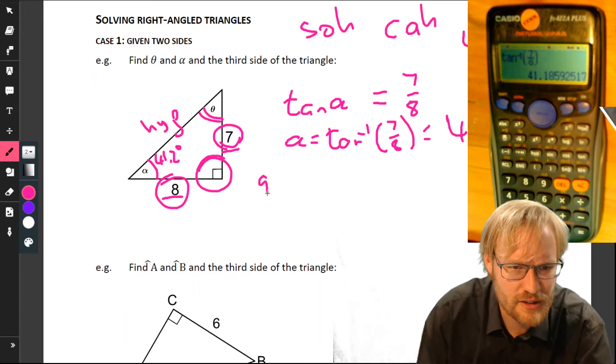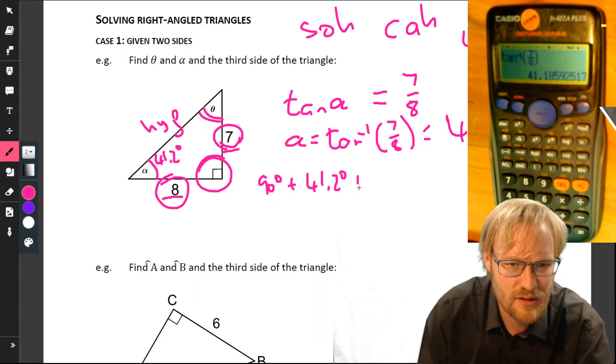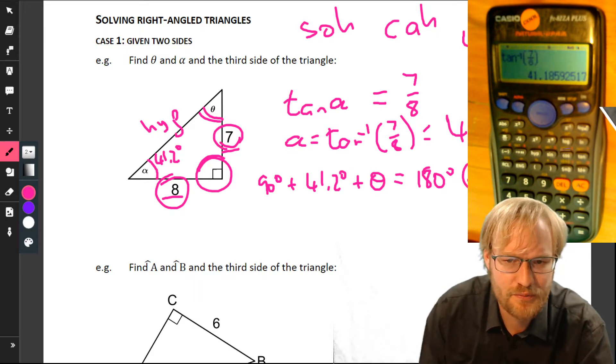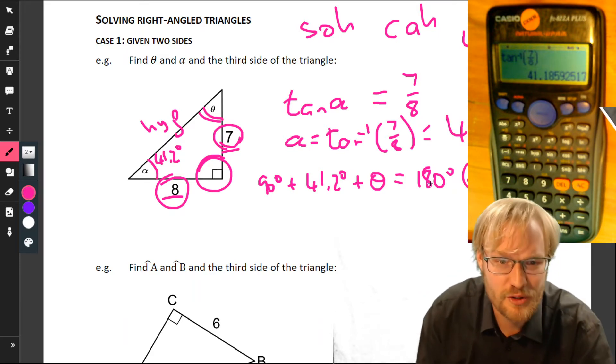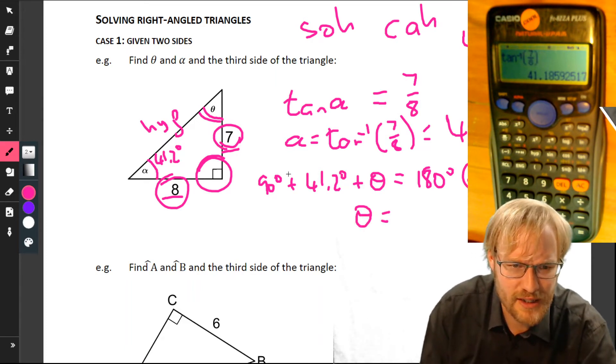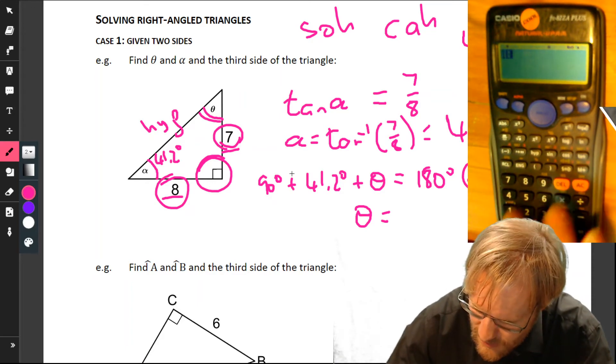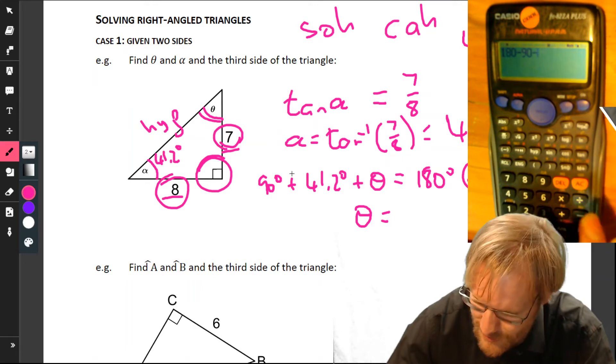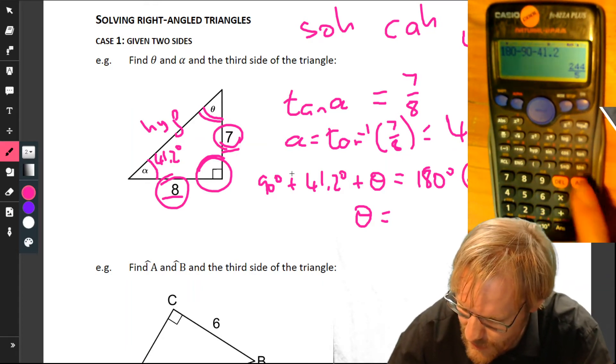We know that 90 degrees plus alpha, 41.2 degrees, plus theta—if we add all our angles up, we must get 180 degrees. Reason: sum of angles in triangle must always give our reasoning for what we're doing. Therefore, theta equals 180 minus that minus that. So we've got 180 minus 90 minus 41.2.